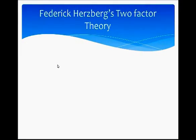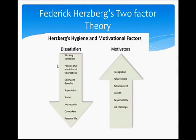The second important theory of motivation is Herzberg's Two-Factor Theory. Frederick Herzberg classified the factors that affect motivation into two groups: hygiene factors, otherwise known as dissatisfiers, and motivational factors, otherwise known as motivators. The important dissatisfiers are working conditions, company policies and administration practices, salary and benefits, supervision, status, job security, relationship with other workers, and personal life. The dissatisfiers are those factors whose presence will not motivate an employee, but whose absence may dissatisfy an employee. The important motivators are recognition, achievement, advancement, growth, responsibility, and job challenge.